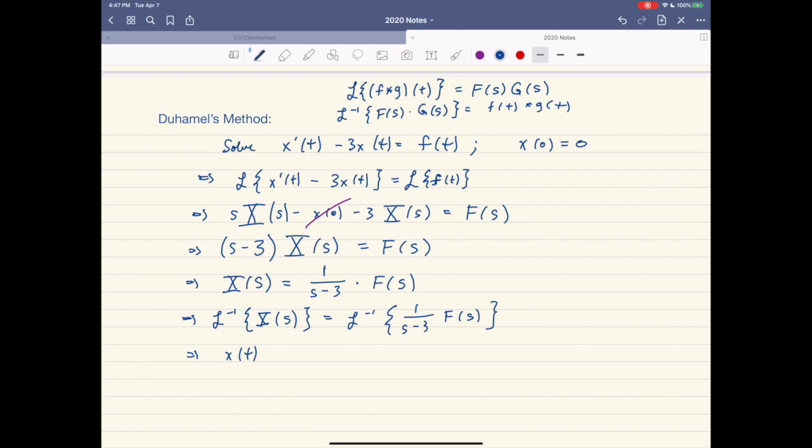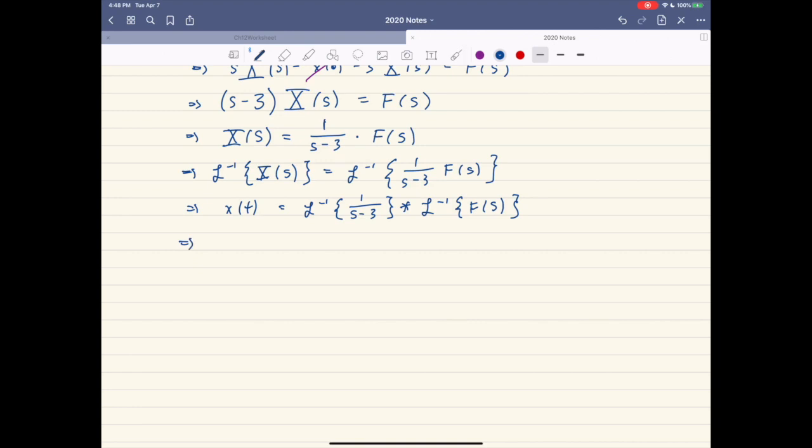And when we take the inverse Laplace transform of a product, this is going to be the convolution of the inverses. So this is going to be the inverse Laplace transform of 1 over s minus 3, convolved with the inverse Laplace transform of capital F. Now the inverse Laplace transform of capital F is nothing more than little f, just based on our convention.